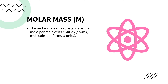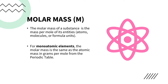In determining the molar mass of monoatomic elements, the molar mass of these elements will be the same as the atomic mass, which is indicated in the periodic table of elements. And instead of using atomic mass units as the unit of measurement, we use grams per mole to express the molar mass of these elements.